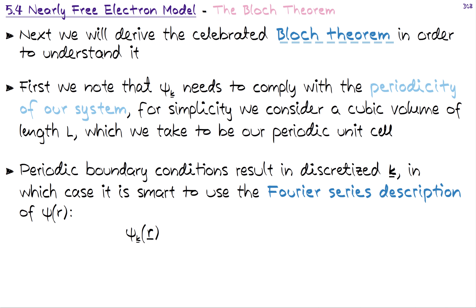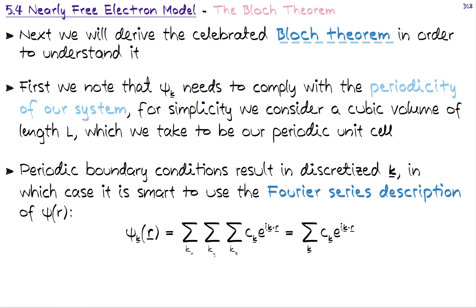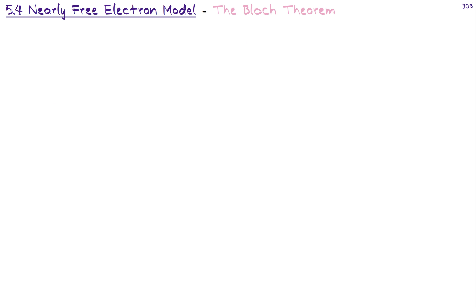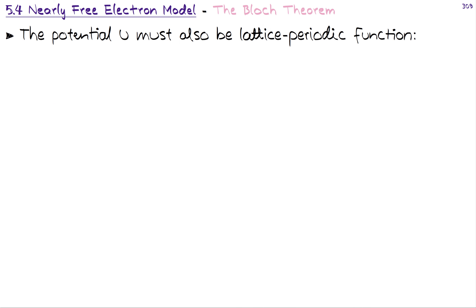Since we have periodic boundary conditions and a periodic system, it is smart to use the Fourier series description for ψ. We can write ψ_k as a summation over k (summing over kₓ, k_y, k_z) of coefficients C_k times the plane wave components. We are really summing over three ordered integers that define the wave vector k, but we simplify the notation to just summing over the vector k. We sum over n_x, n_y, and n_z in practice.